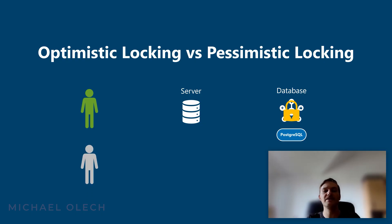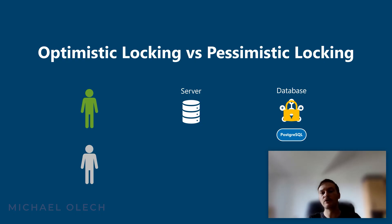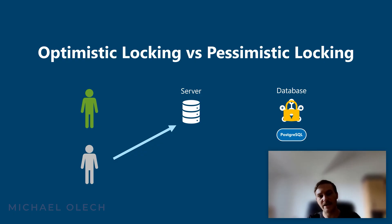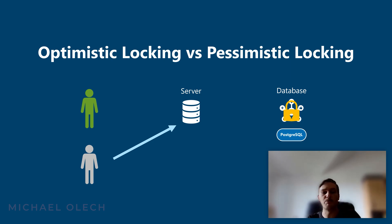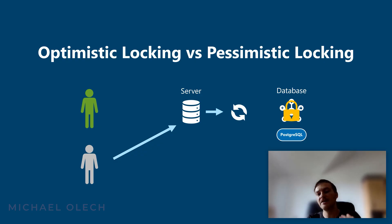This is essential for maintaining the ACID properties of a database, particularly isolation. Without locks, you could have chaotic situations such as two people trying to withdraw money from the same bank account at the exact same time, leading to an incorrect financial balance. Or another situation where one user is reading a report while another user is in the middle of updating the underlying data, resulting in an inconsistent and meaningless report.